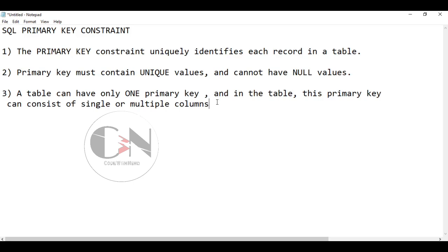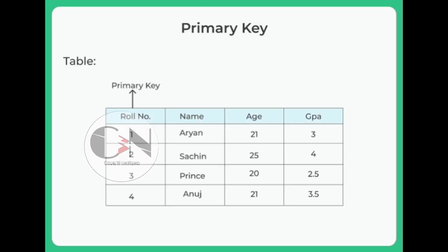Let us check out an example of primary key. This is a student table with role number, name, age, and GPA. As we can see, there are different role numbers with different names, ages, and GPAs. The name, age, and GPA can be repetitive — for example, two students can share the same age or same GPA. The column with unique values is the role number, so we set it as our primary key. Every student will have one unique role number which will not be repetitive or duplicate.